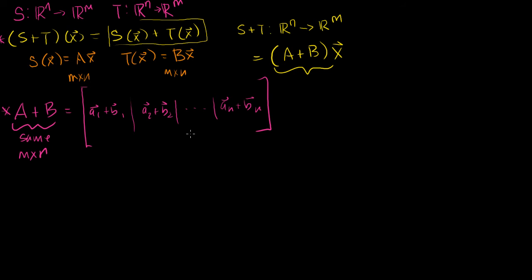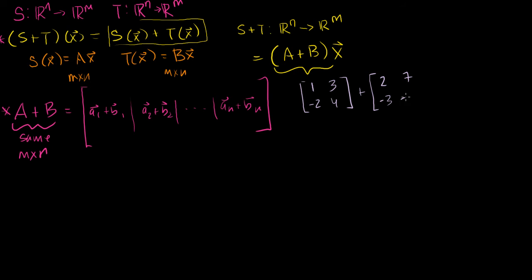Now let's actually add two matrices with a concrete 2 by 2 case. We're adding the matrix [1, 3; −2, 4] to the matrix [2, 7; −3, −1]. Remember, they have to have the same dimensions.